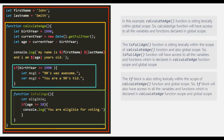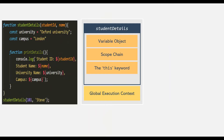The same goes for this if block. We have also learned that when a function is called, an execution context for that function gets created in the call stack. For example, when the studentDetails function is called, an execution context for the studentDetails function has been created here. And this execution context has a variable object, a scope chain, and a this variable.